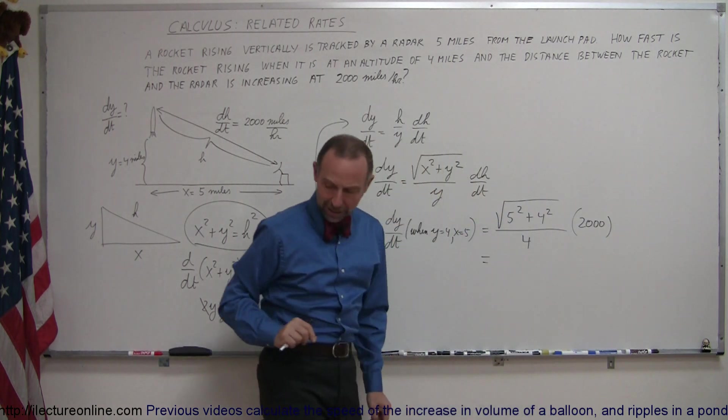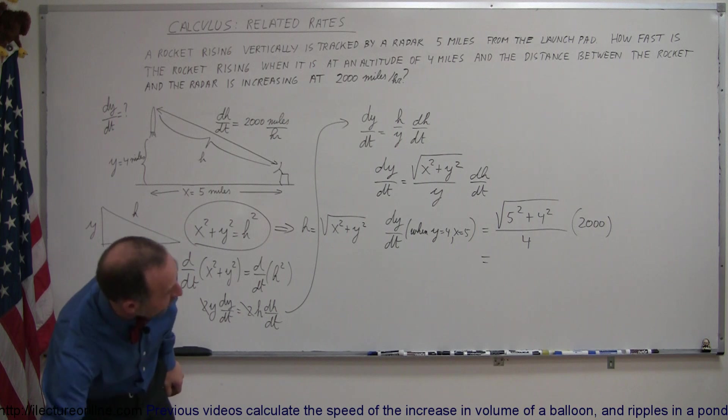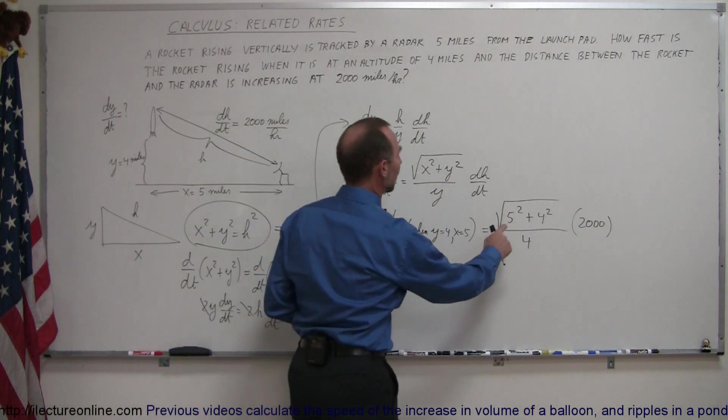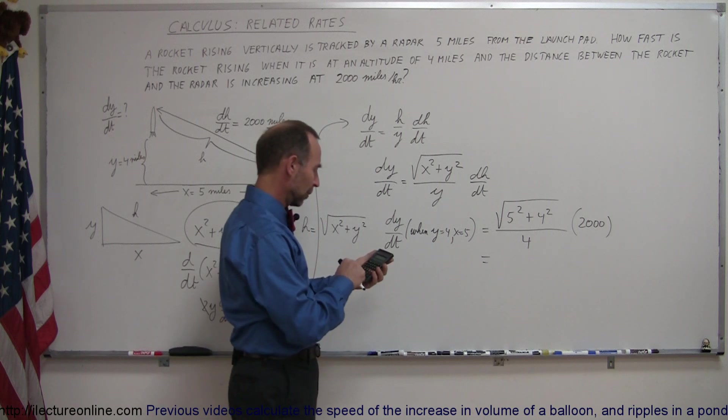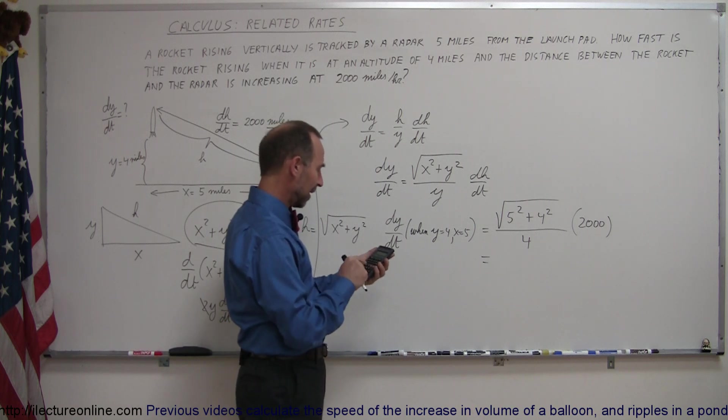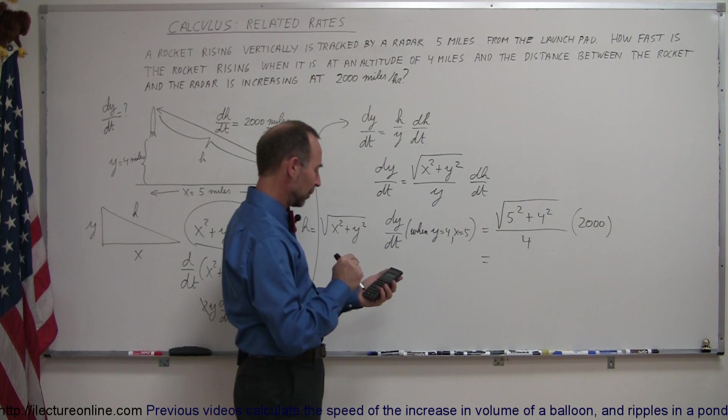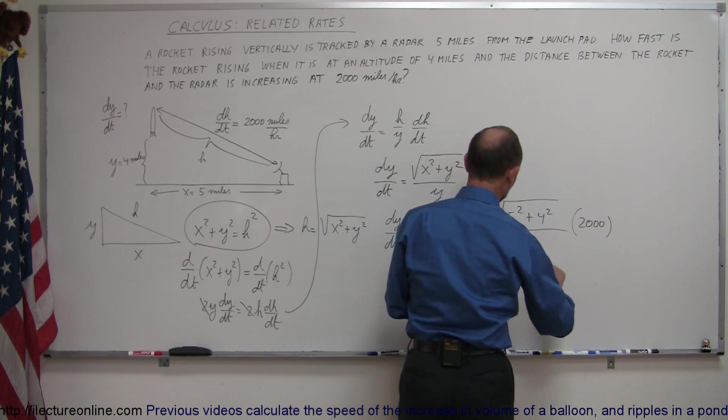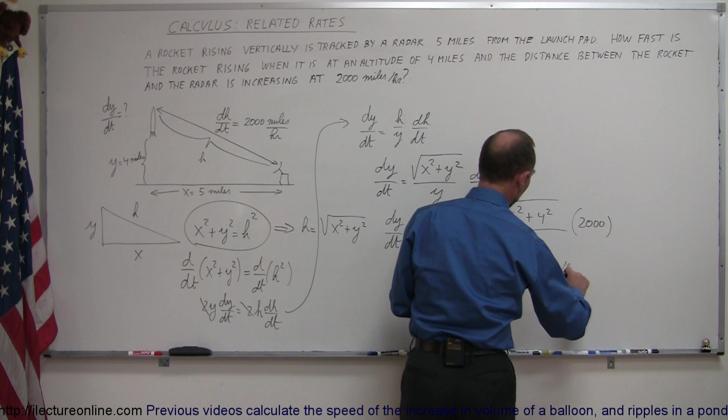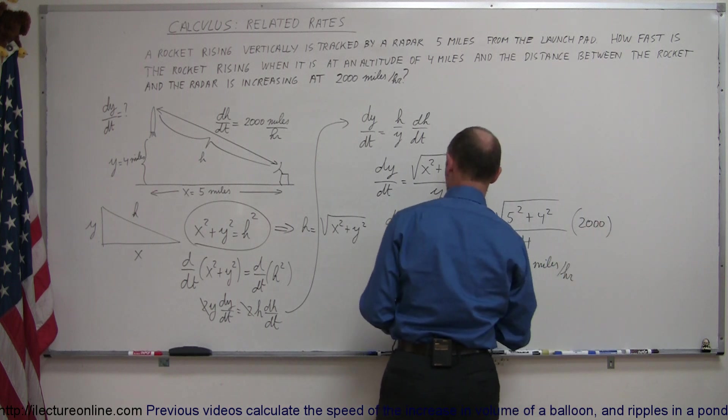And I think we're going to need a calculator for that. So let me grab my calculator here. So we have 25 plus 16, that is 41. Take the square root of 41, divide it by 4, and multiply it times 2,000. And what do we get? Round it off, we get 3,200, and of course that was in terms of miles per hour, because 2,000 was in miles per hour.